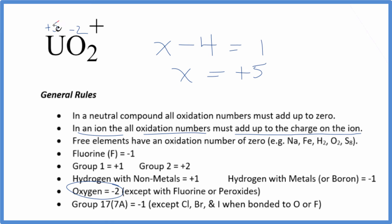We have 2 times minus 2, that's minus 4. Minus 4 and positive 5, that equals the charge on the ion. This is Dr. B with the oxidation numbers for UO2 plus.